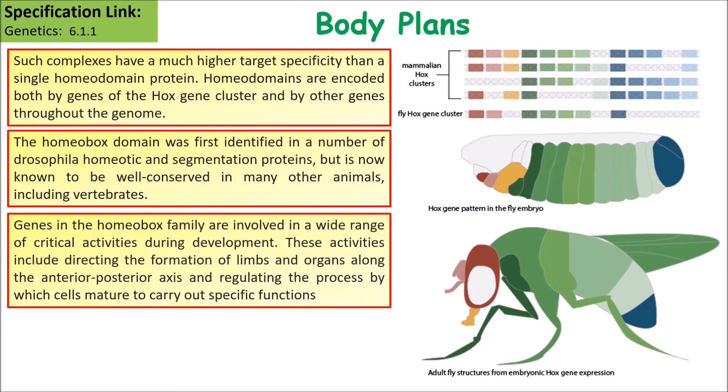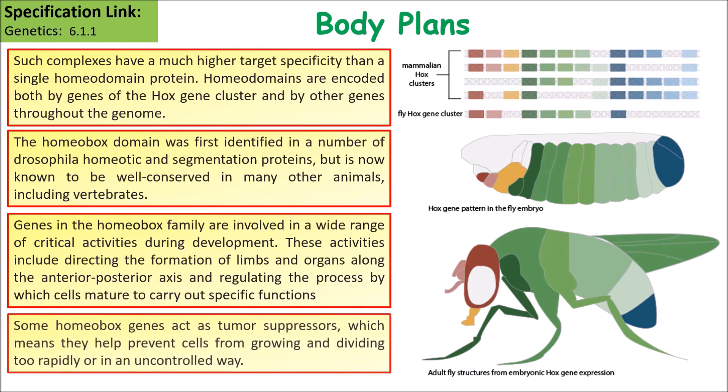Genes in the homeobox family are involved in a wide range of critical activities during development. These activities include directing the formation of limbs and organs along the anterior-posterior axis, and regulating the process by which cells mature to carry out specific functions. Some homeobox genes also act as tumour suppressors, which means that they help prevent cells growing and dividing too rapidly in an uncontrolled way.